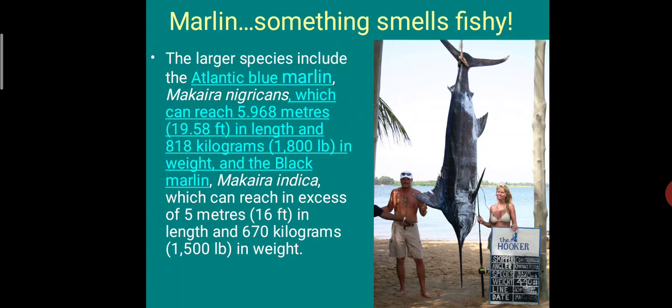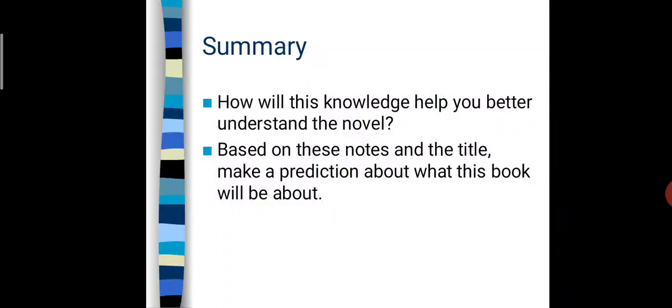The 'marlin' is the large fish the old man catches and then loses. The Atlantic blue marlin can reach 5.968 meters — almost 19.58 feet — in length and 818 kilograms in weight. The black marlin can reach in excess of 5 meters in length and 670 kilograms in weight.